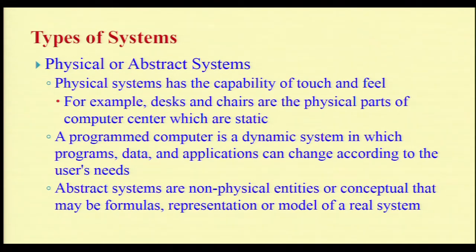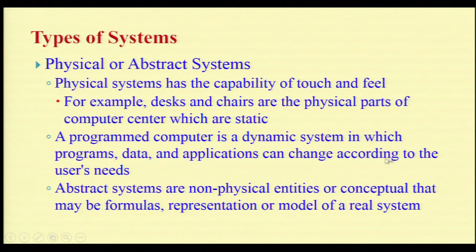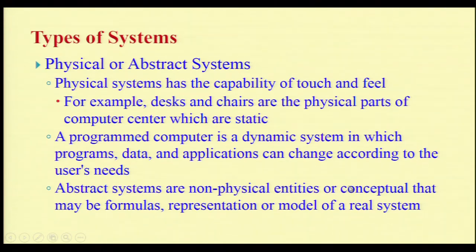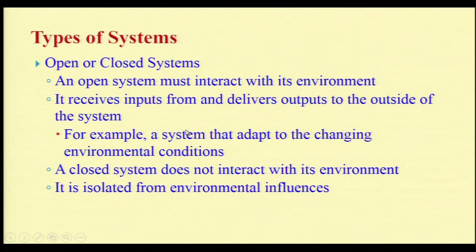In the case of a dynamic system, a computer has programs — it is a dynamic system in which programs, data, and applications can change according to the user's needs. An abstract system is a non-physical or conceptual system that may be formulas, representations, or a model of a real system. The second type is the open or closed system. An open system must interact with the environment — it receives input from and delivers output to the outside.